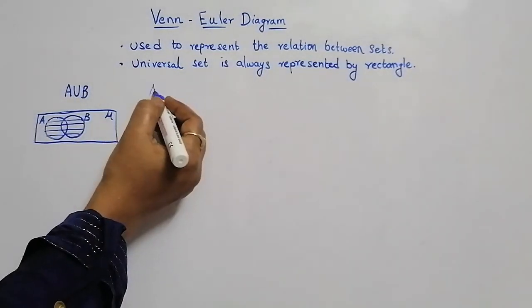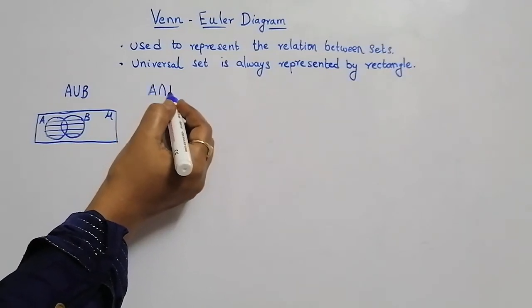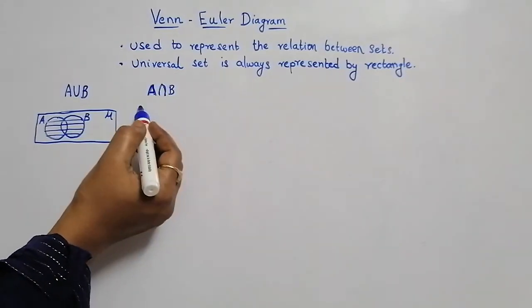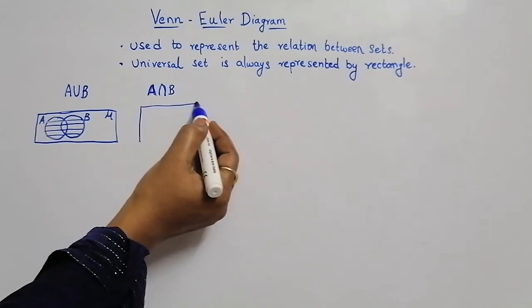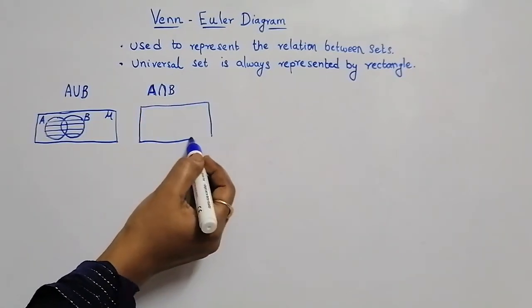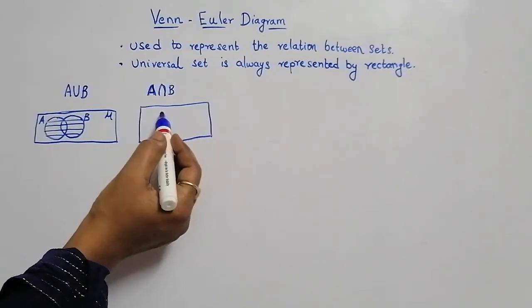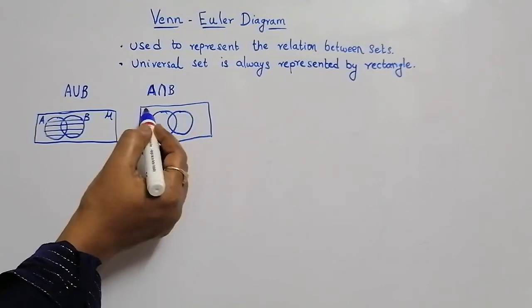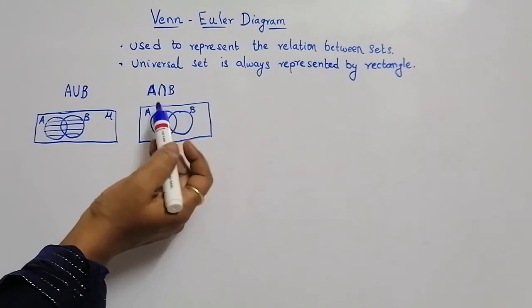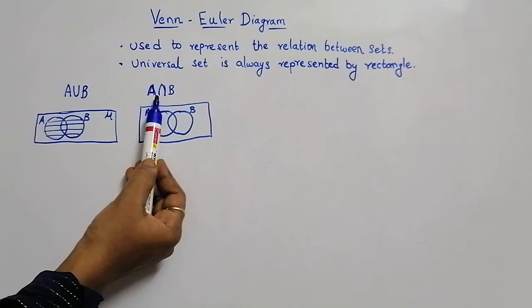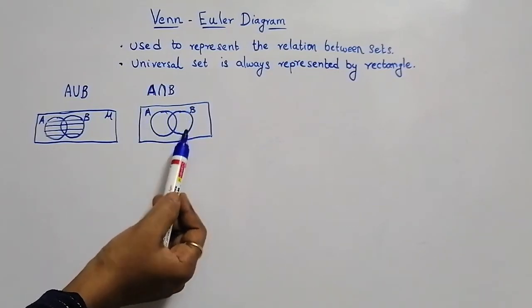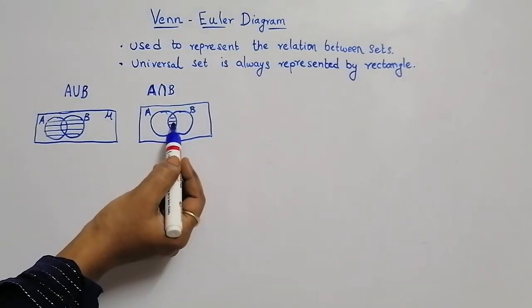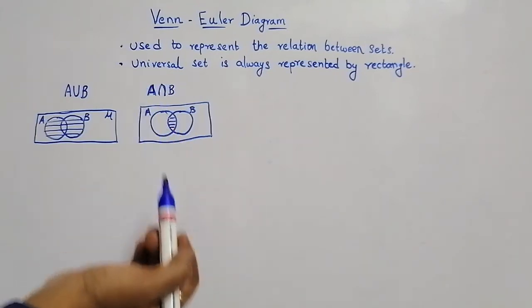Now let us consider A intersection B. A intersection means the common elements in set A and set B. We draw a rectangle for the universal set, and inside we have sets A and B. Intersection means the elements within A and elements within B — the common elements. The elements inside the overlapping part give us the intersection.